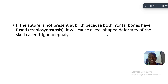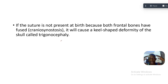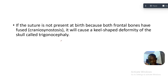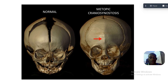Cranial synostosis will cause a keel-shaped deformity of the skull. Why is this suture important in infants? Because the brain actually grows in size. When being given birth to, the bones actually override so that the infant's head is able to go through the birth canal. If this is fused at birth, it is called cranial synostosis.